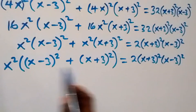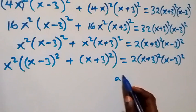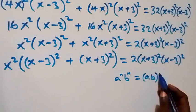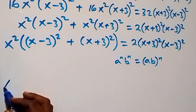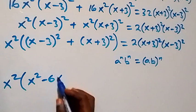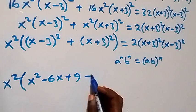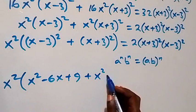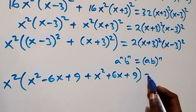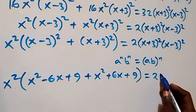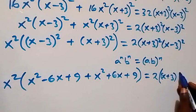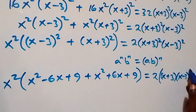We expand the brackets. Also, using the rule that (a·b)^n = a^n · b^n, expanding (x-3)² gives x²-6x+9, and expanding (x+3)² gives x²+6x+9. On the right-hand side, (x+3)(x-3) all squared.